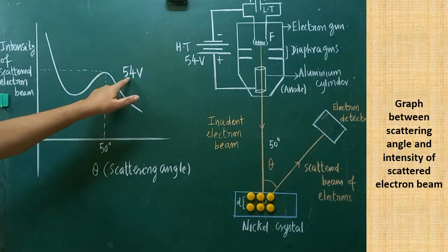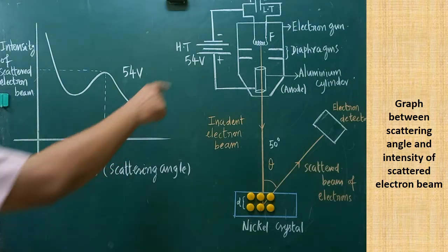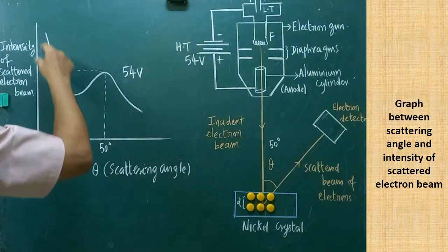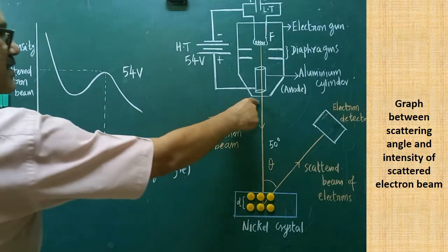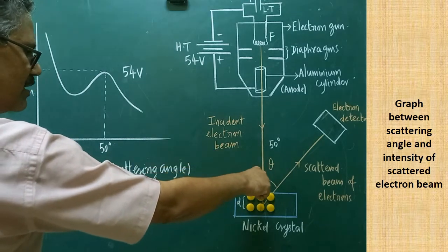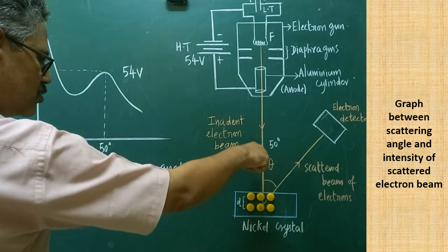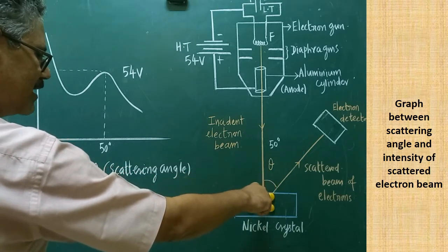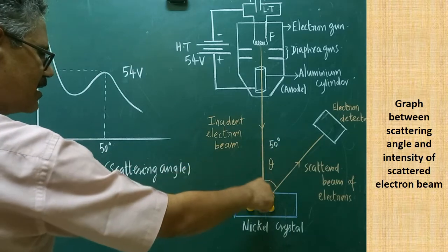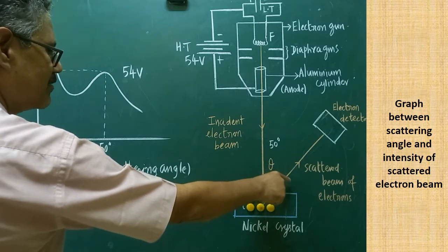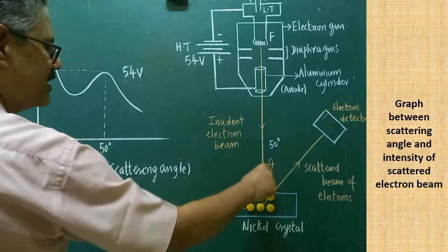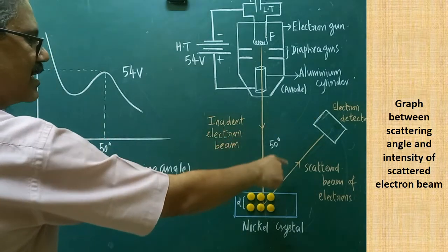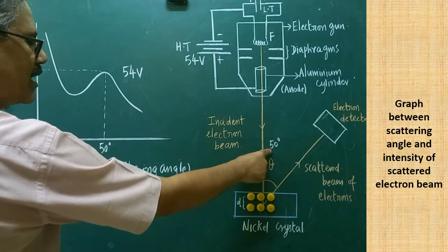This graph is drawn for a particular accelerating potential of 54 volts applied between cathode and anode. The incident electron beam passes through the crystal; some electrons are scattered from the surface while others pass through. Due to diffraction, they bend around the atoms. After getting diffracted, they come out from the crystal. The scattered and diffracted electrons interfere with one another, and due to constructive interference, high intensity electrons are obtained at a particular angle.